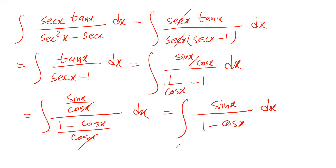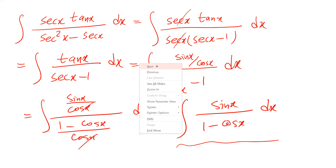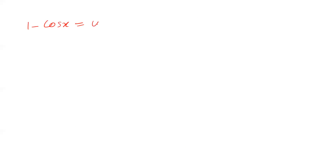So this integral you can solve it using the substitution rule. If you define u = 1 minus cosine x, and if you take the derivative of each side of this equation, you'll conclude that sine x dx will be equal to du.